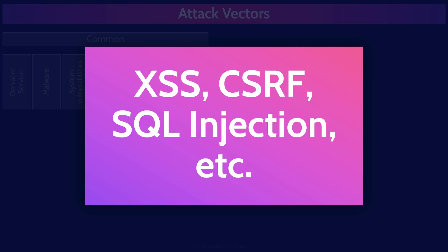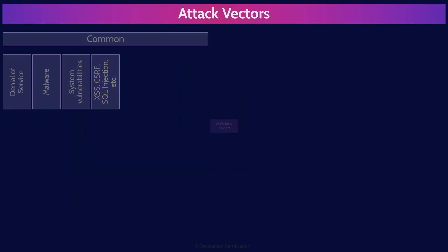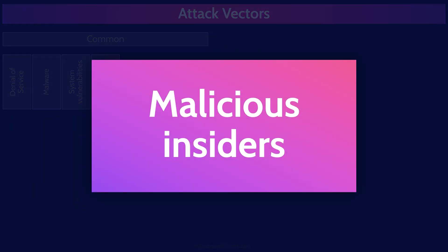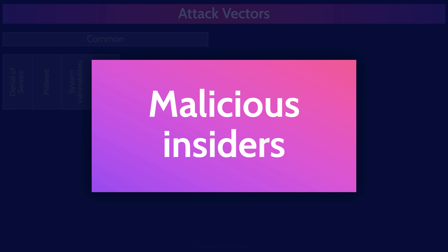We'll talk about cross-site scripting, cross-site request forgery, SQL injection, and buffer overflows in much more detail in a later mind map. Malicious insiders are employees, contractors, or other internal individuals that can cause harm to the organization and its systems. They pose a substantial threat because they already have access to sensitive data and systems, may know where that data is stored, and know how to cause particular harm to the organization.